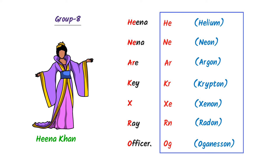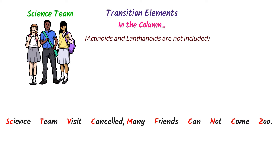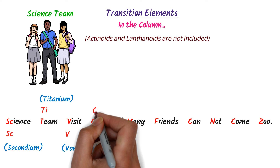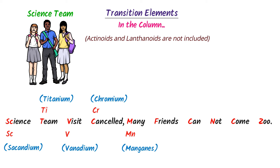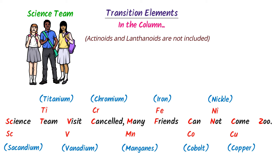So we have learned the eight main groups of the periodic table. Now we will learn about transition elements. Remember that I write them in columns. Consider the science team of your school. I say: science team visit cancelled, friends cannot come zoo. Here, Sc stands for Scandium, Ti for Titanium, V for Vanadium, Cr for Chromium, Mn for Manganese, Fe for Iron, Co for Cobalt, Ni for Nickel, Cu for Copper, Zn for Zinc. This is the first column of transition elements.